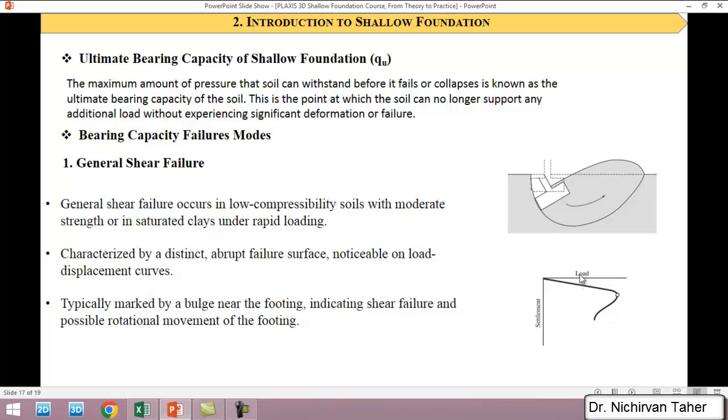But at some point, an abrupt drop of the load occurs, and the load starts to decrease while the settlement starts to increase. Also, this type of failure is marked by a bulge near the footing. As we can see in here, when shear failure happens, some of the soil goes upward near the foundation, so this is also an indicator of general shear failure.